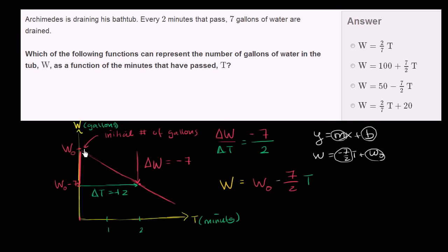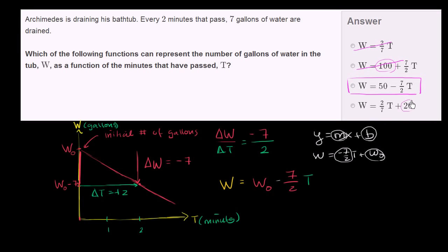So which of these answer choices match that pattern? I should start with some positive number of gallons and subtract seven halves t. The only one that matches is this one: 50 minus seven halves t. Even without thinking about slopes, I should start with a certain number of gallons that only decreases as time passes. One choice has no gallons at time equals zero — that doesn't work. Another starts at 100 gallons but increases over time, so the faucet is on — not being drained. Another also starts with gallons but increases. So the only one where I start with a certain number of gallons and they reduce over time — because this is a negative value — is this choice right over here.